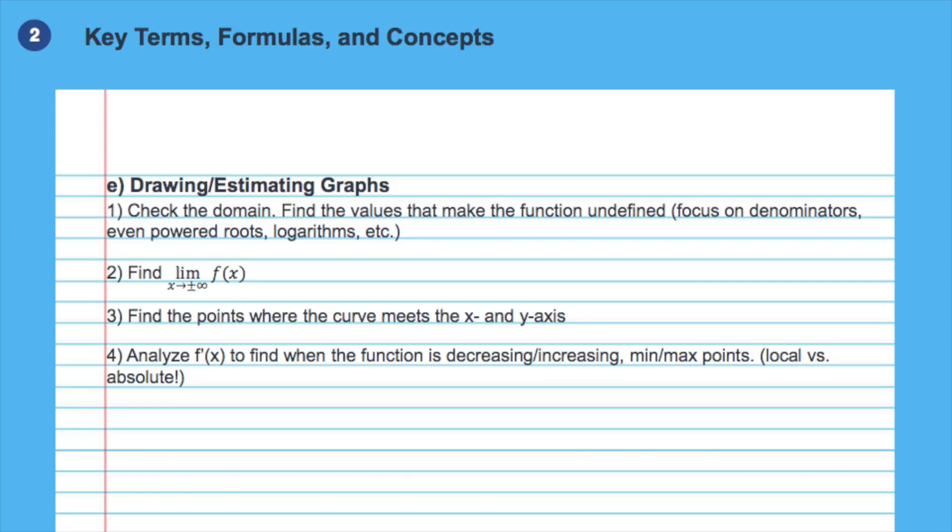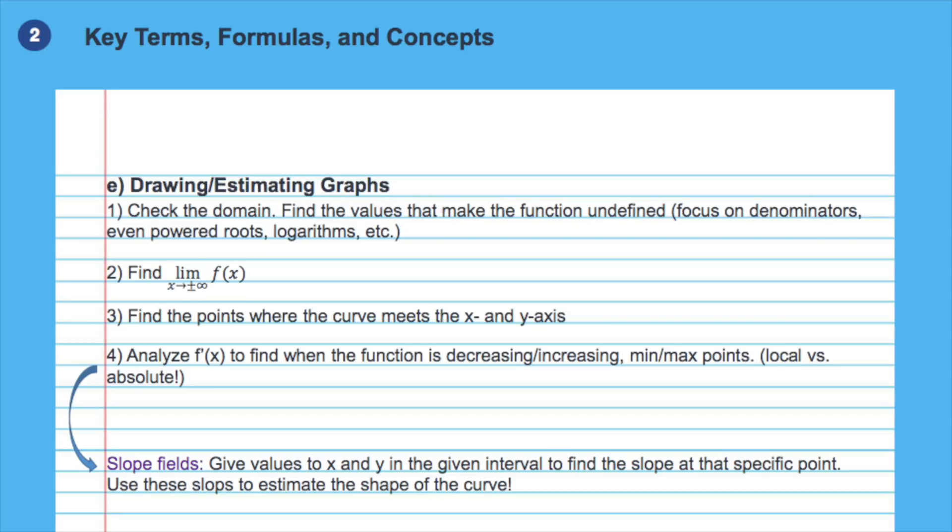Another useful tip is to use slope fields. Use f prime to calculate the slope of a function at given points such as 1 1, 1 0, 1 minus 1, etc., according to what values fit the function and your interval best. After doing this for multiple points, you will have a general shape of the curve.